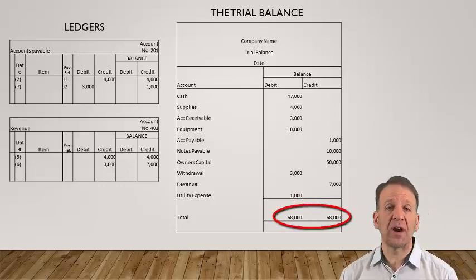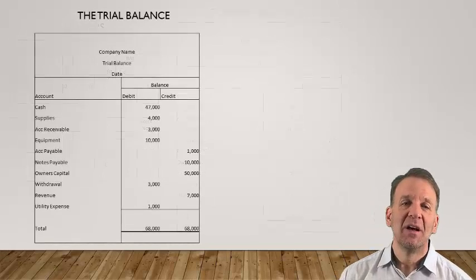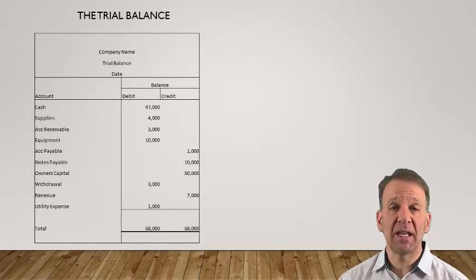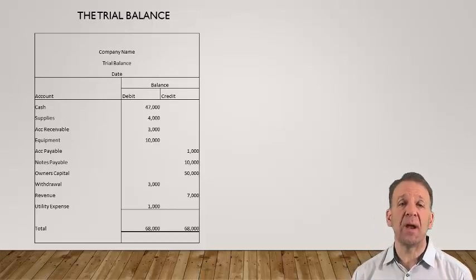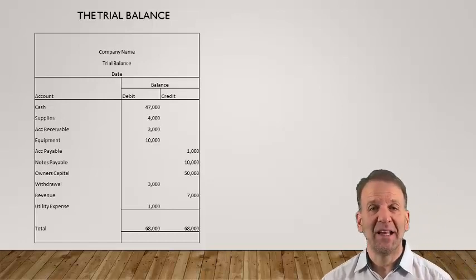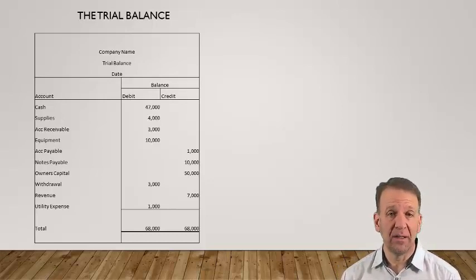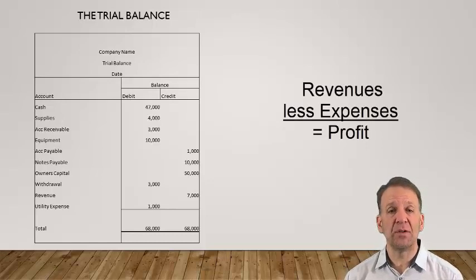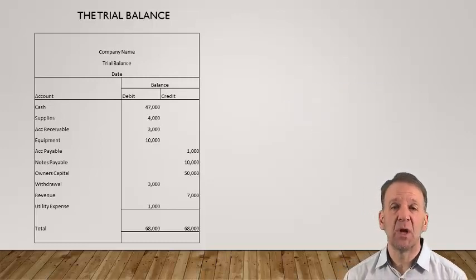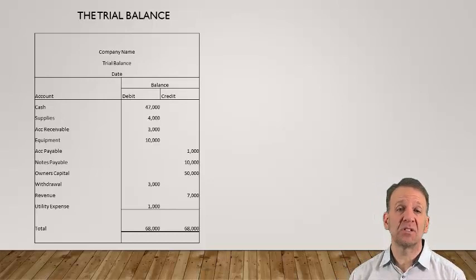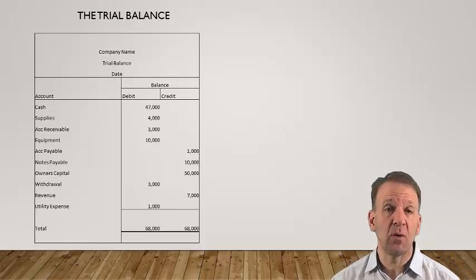Now that we're comfortable that our trial balance is in balance, we can begin to prepare our financial statements. On this slide, you see the trial balance once again and now we're going to prepare an income statement. It's the first financial statement we prepare. An income statement calculates the net income or profit for the business for a certain time period. An income statement in general includes revenues minus the expenses. When we prepare a financial statement such as an income statement, we never put debits or credits in the financial statements.